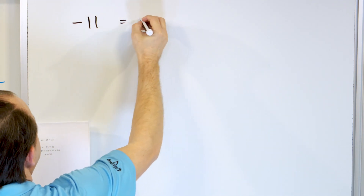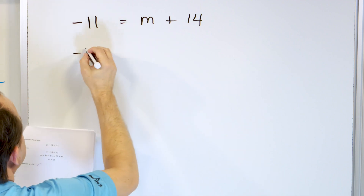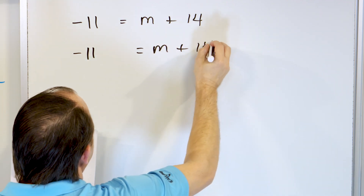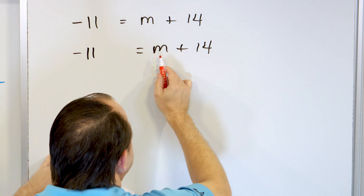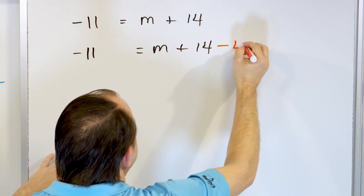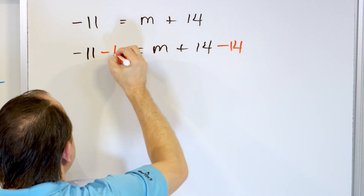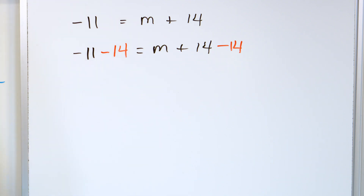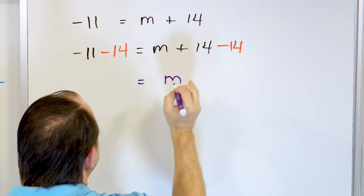Let's take a look at problem 3: negative 11 equals m plus 14. We're adding 14 over here. We want to get rid of that, so we undo it by subtracting 14, and we must do the same thing to the other side. On the right-hand side, 14 minus 14 goes away, so we just have m.